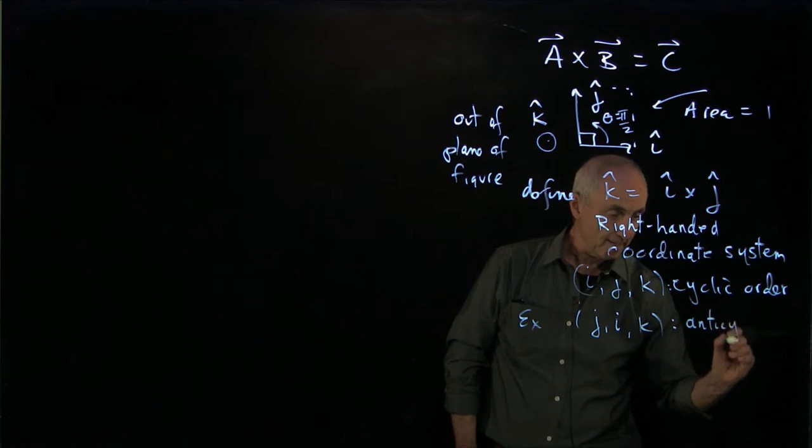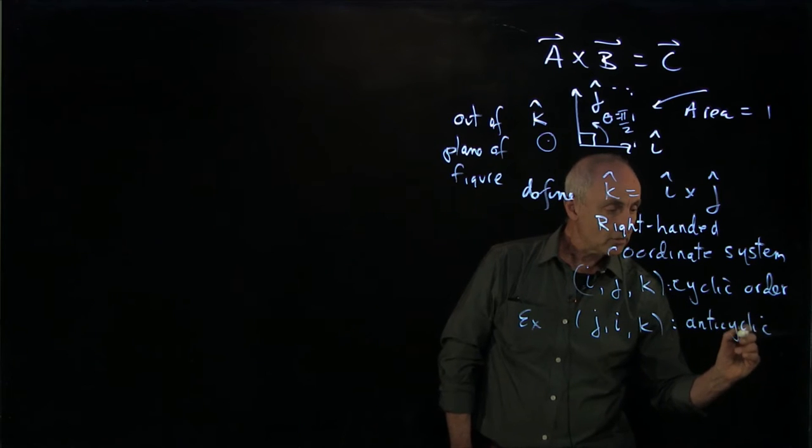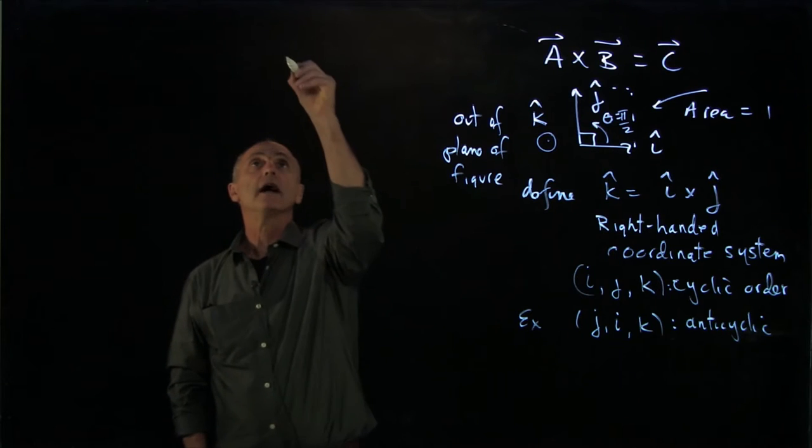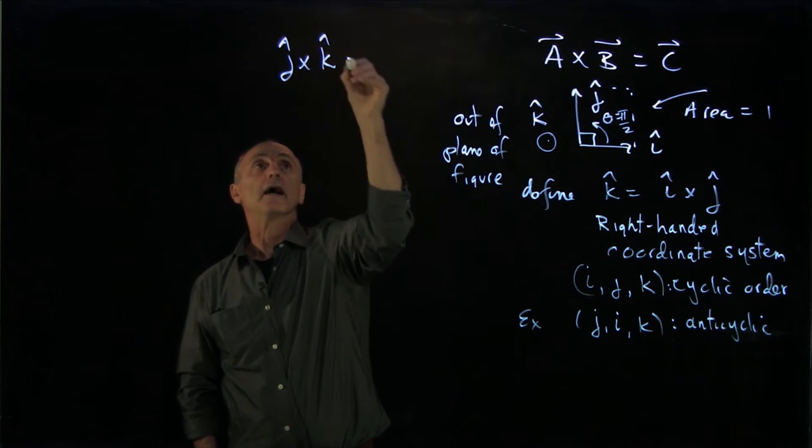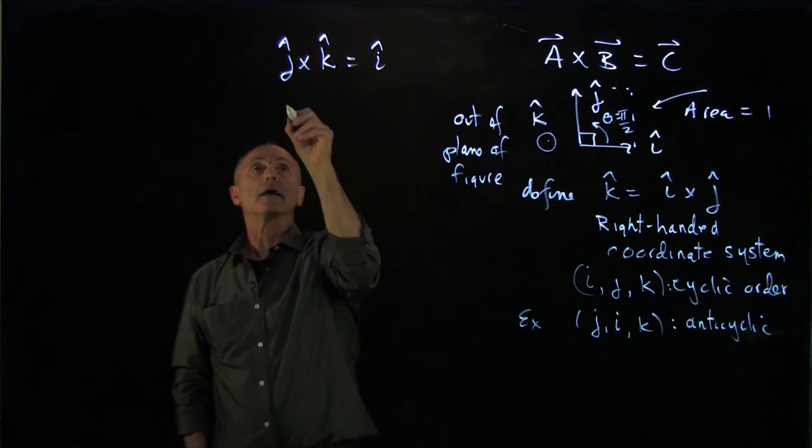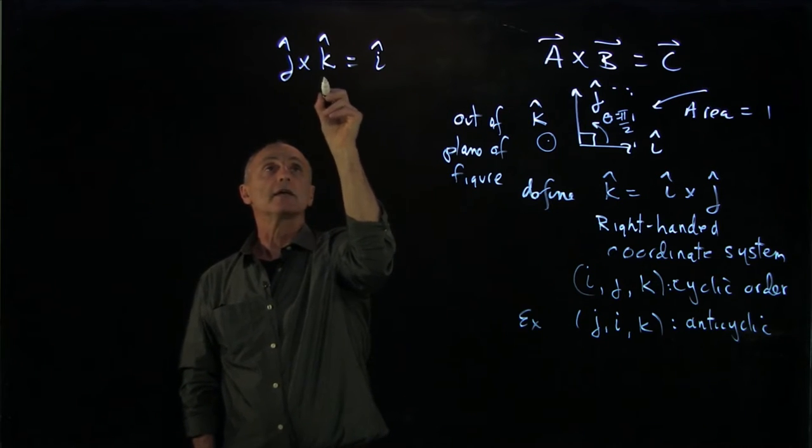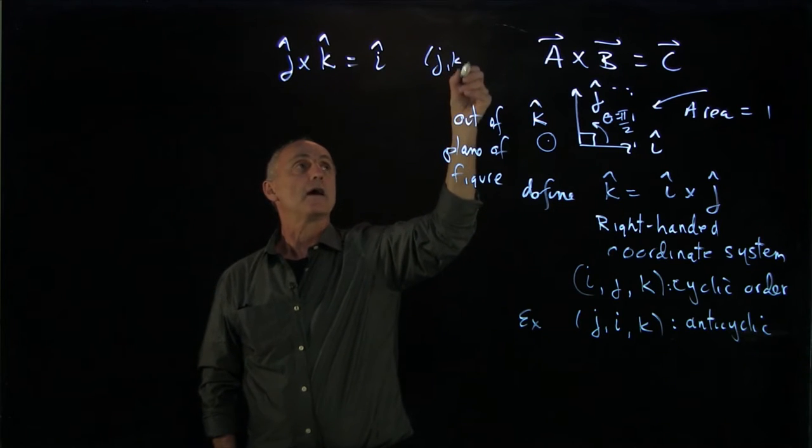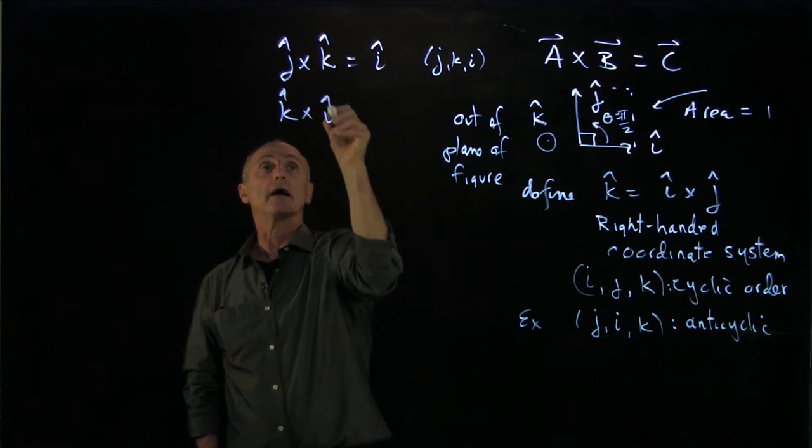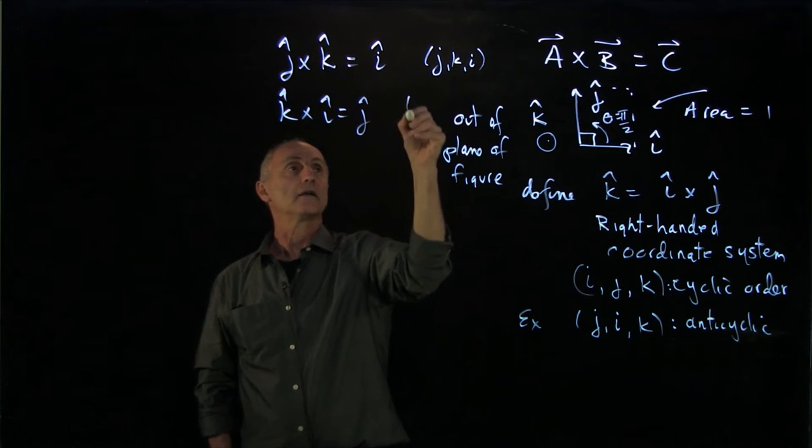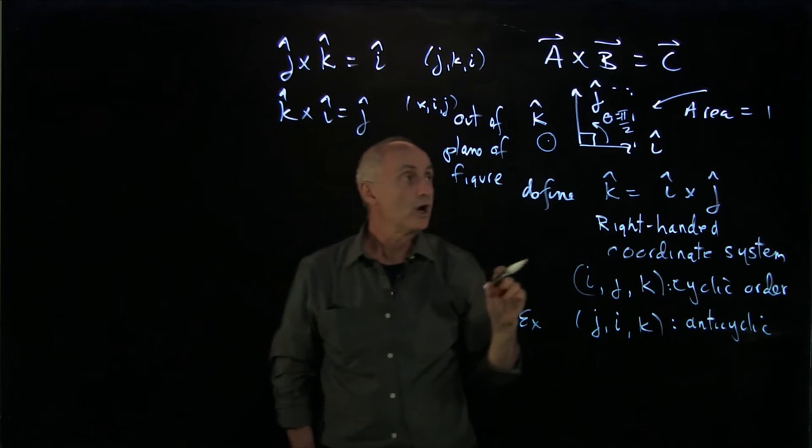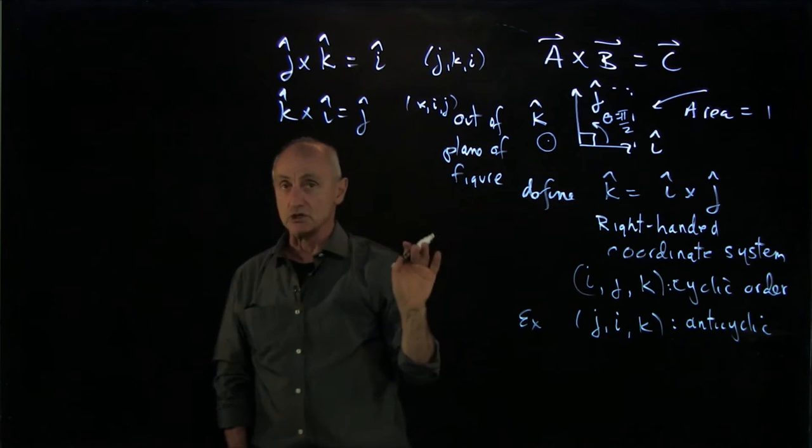And the cross products satisfy this cyclic rule in that j cross k hat is i hat. And notice j, k, i, j, k, i maintains that cyclic order. And k hat cross i hat is j hat. k, i, j maintains that cyclic order.